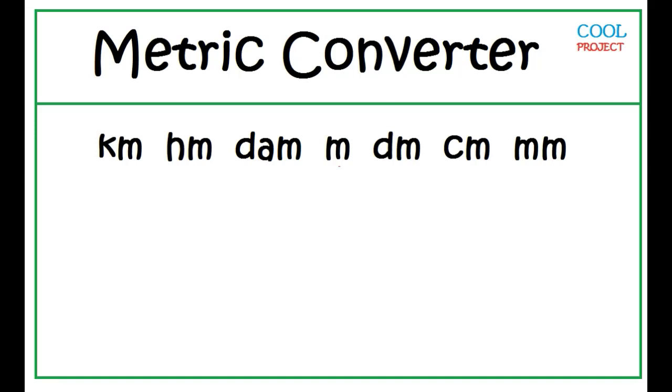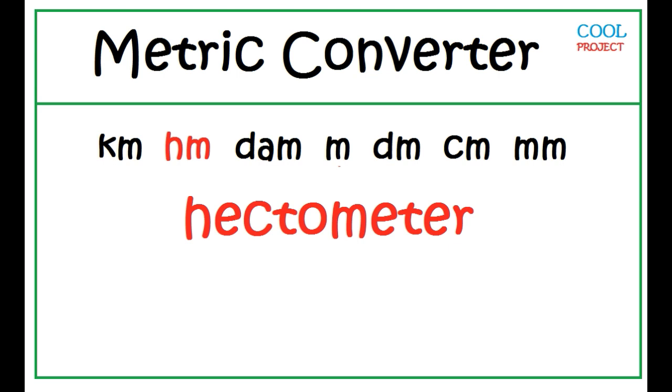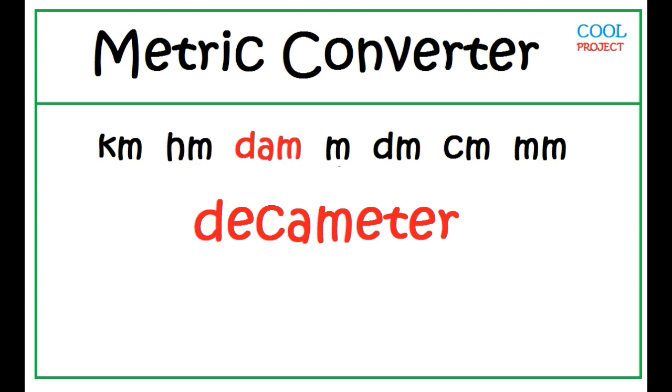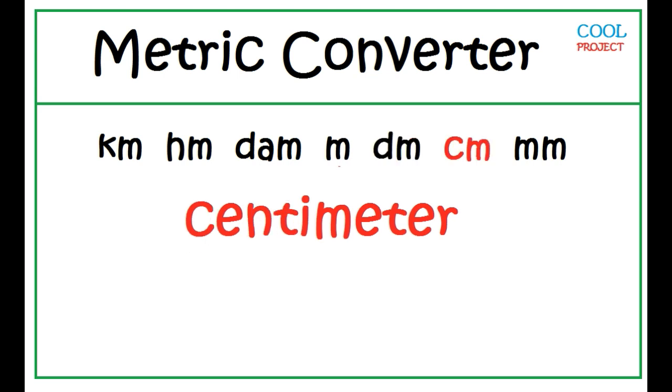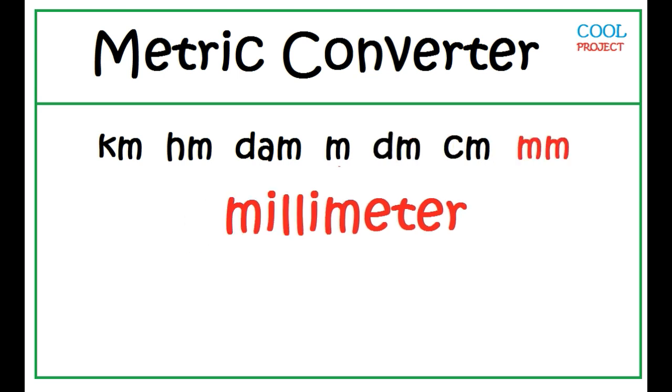Let's convert one metric unit to another by using the metric converter. Simply write the following units of measure in order: Kilometer, Hectometer, Decameter, Meter, Decimeter, Centimeter, Millimeter.